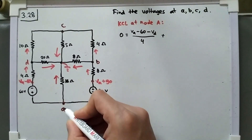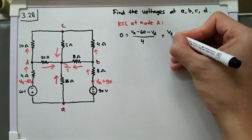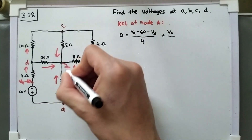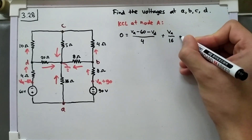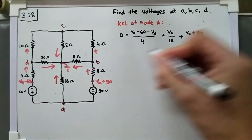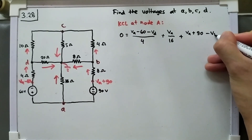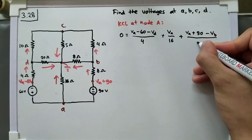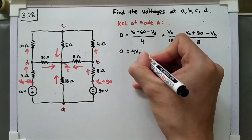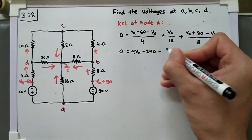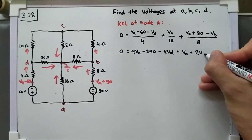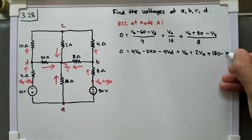We will have: (VA minus 60 minus VD) divided by 4, plus VA divided by 16 (since this node is ground, zero), plus (VA plus 90 minus VB) divided by 8. Multiplying both sides by 16, we get: 0 equals 4VA minus 240 minus 4VD plus VA plus 2VA plus 180 minus 2VB.